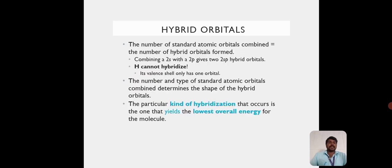Hybrid Orbitals: The number of standard atomic orbitals combined is equal to the number of hybrid orbitals formed. For example, combination of 2s with 2p gives 2 sp hybrid orbitals. Hydrogen cannot hybridize because each valence shell only has one orbital.